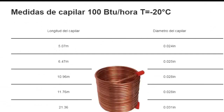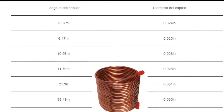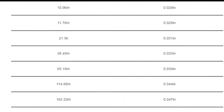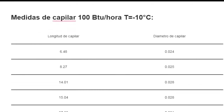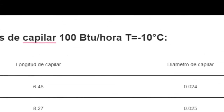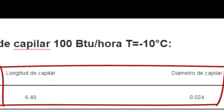Let's look at the measurements for a capillary with the same 100 BTU per hour, but now with a temperature of minus 10 degrees Celsius — that is, for a medium temperature application. This means we are increasing the temperature but with the same cooling capacity. With a diameter of 0.24 inches, the recommended capillary length is now 6.48 meters.